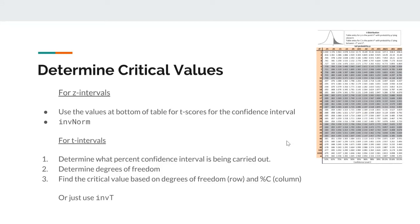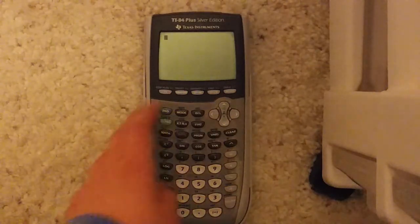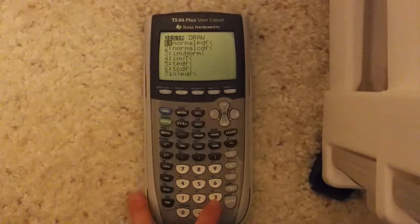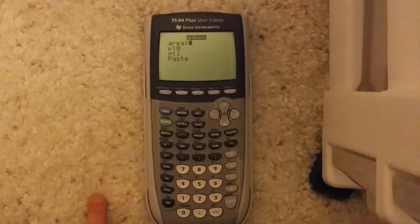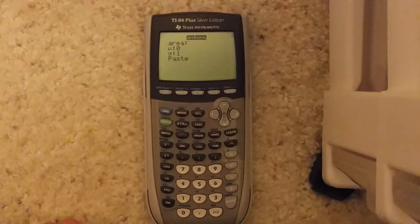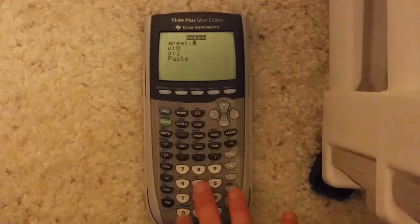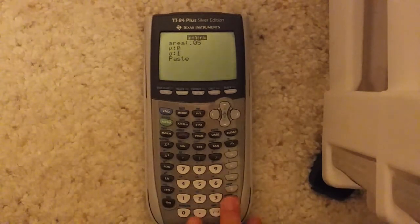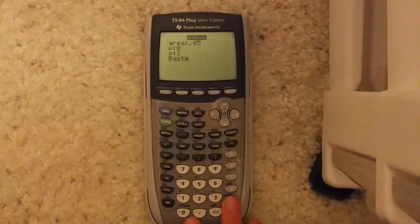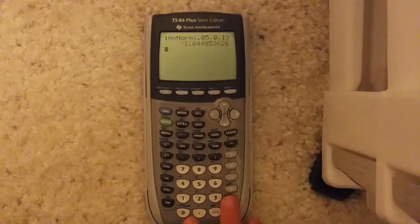The other way you could do it is use the inverse norm function on a graphing calculator. For the confidence interval, you're going to hit second, distribution, inverse norm. Area is the same as 1 minus your percent confidence interval divided by 2. So in the case of a 90% confidence interval, 1 minus 0.9 divided by 2 is 0.05. Mean is 0, standard deviation is 1. Don't touch that, otherwise you'll get a weird value. Hit paste, enter, flip the sign, and that's your answer.